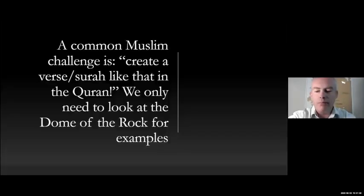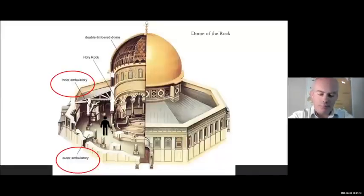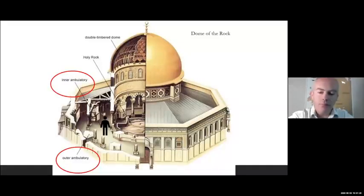I would argue that there was a sect prior to Islam called the Abrahamist sect, and this was part of their theology. In the early Muslim literature, they call the Church of the Holy Sepulcher in Arabic the 'church of resurrection.' But the first Muslims called it the 'church of rubbish,' where they throw the rubbish and burn it there. So it's very clear that this was against Byzantine Christianity.